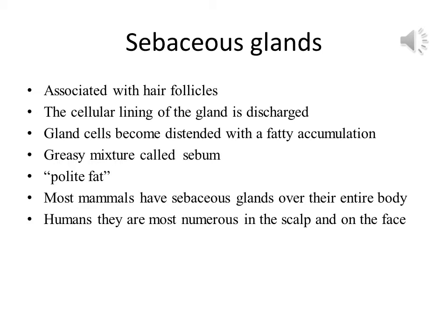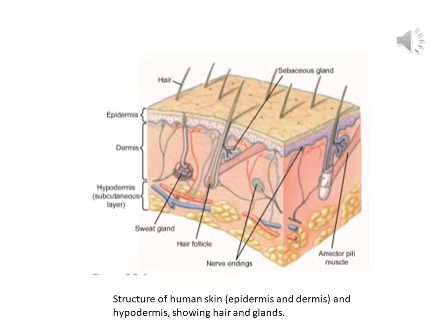Sebum serves as a dressing to keep skin and hair pliable and glossy. Most mammals have sebaceous glands over their entire body; in humans they are most numerous on the scalp and face. This diagram shows the structure of human skin, illustrating the epidermis, dermis and hypodermis with the hair, sebaceous glands, erector pili muscles, nerve endings, hair follicles, sweat glands and subcutaneous layer.